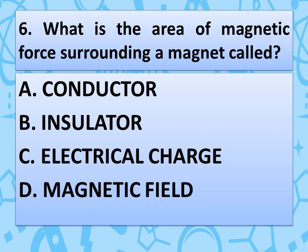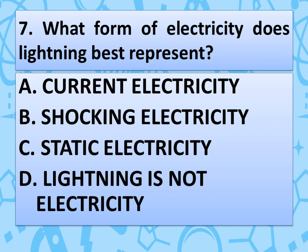What is the area of magnetic force surrounding a magnet called? Read the options very carefully. The correct answer is option D — magnetic field.